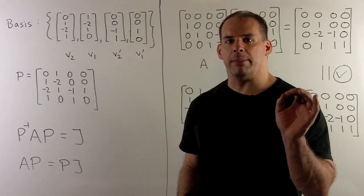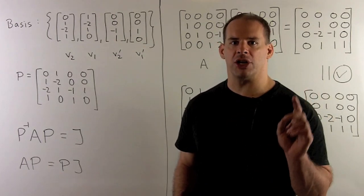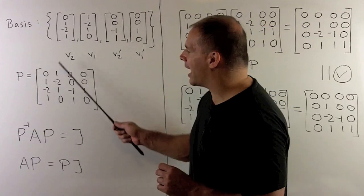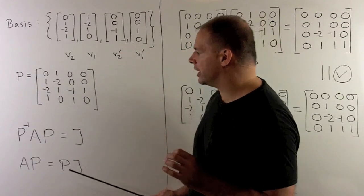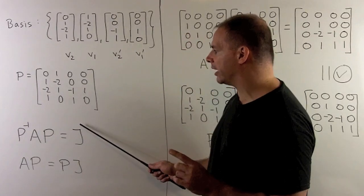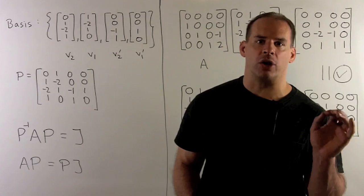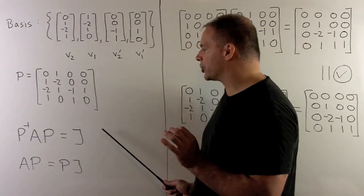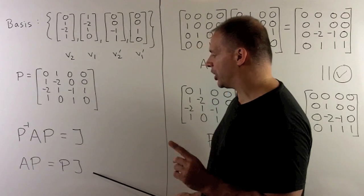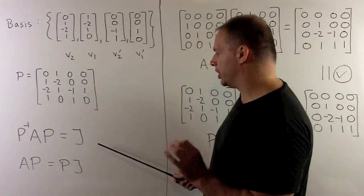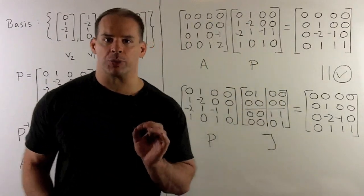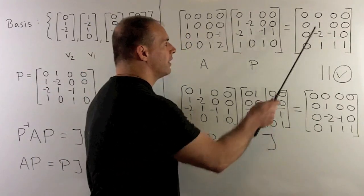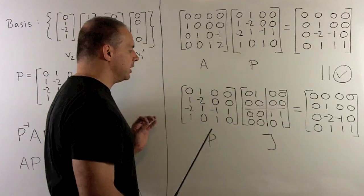Now that we have our basis, we can find the matrix P that carries A to Jordan form by conjugation. We get matrix P by loading our basis vectors in as column vectors. The relation is P inverse AP equals our Jordan form J. To check our work without inverting P (which is 4 by 4 and takes some effort), we push P to the other side and check A times P equals P times J. Working out each product, we compute A times P and P times J and note these are equal, confirming our relation AP = PJ.